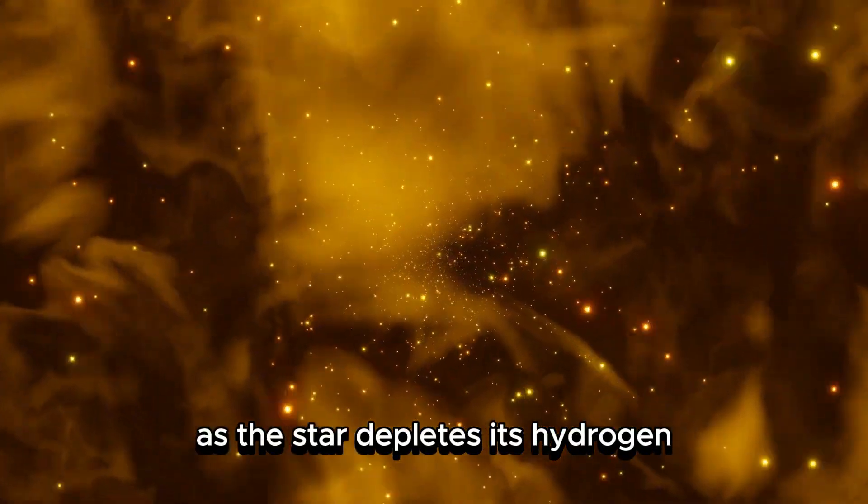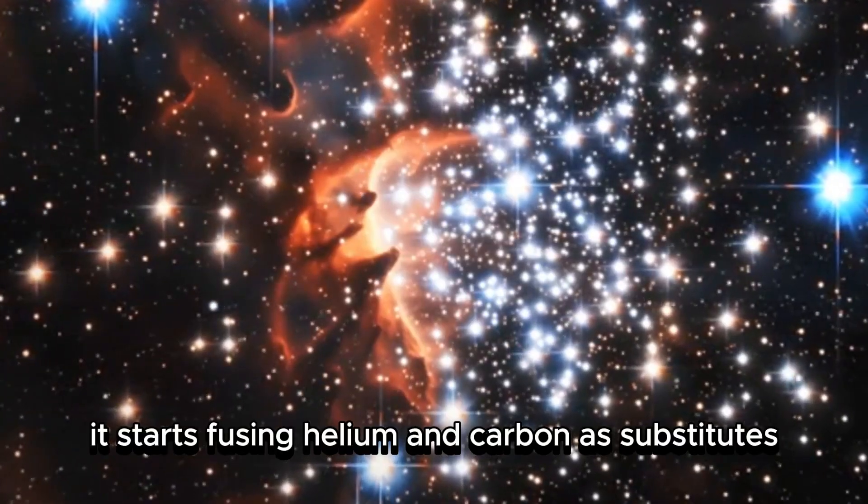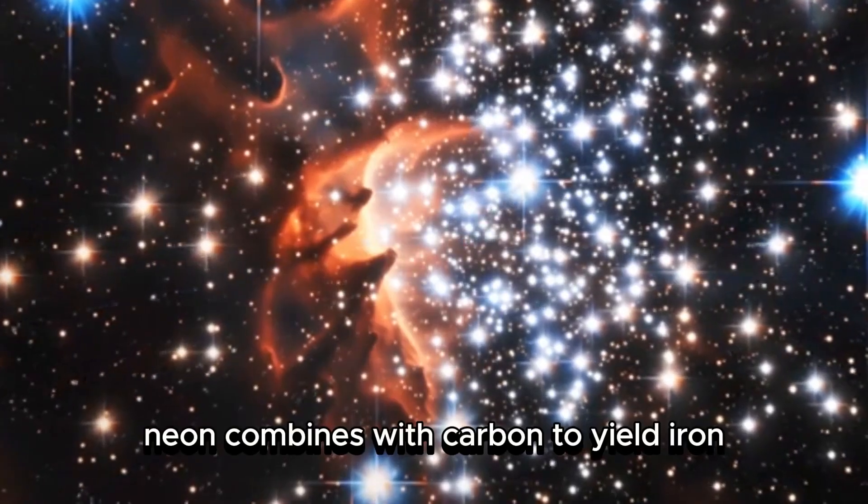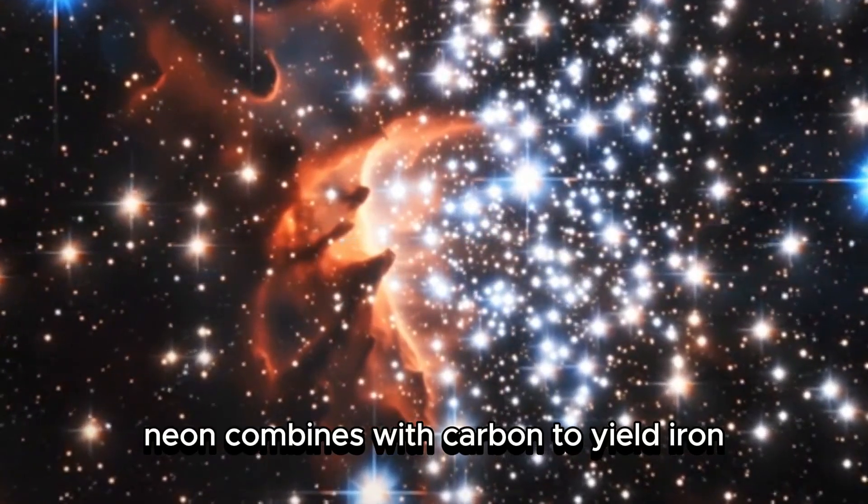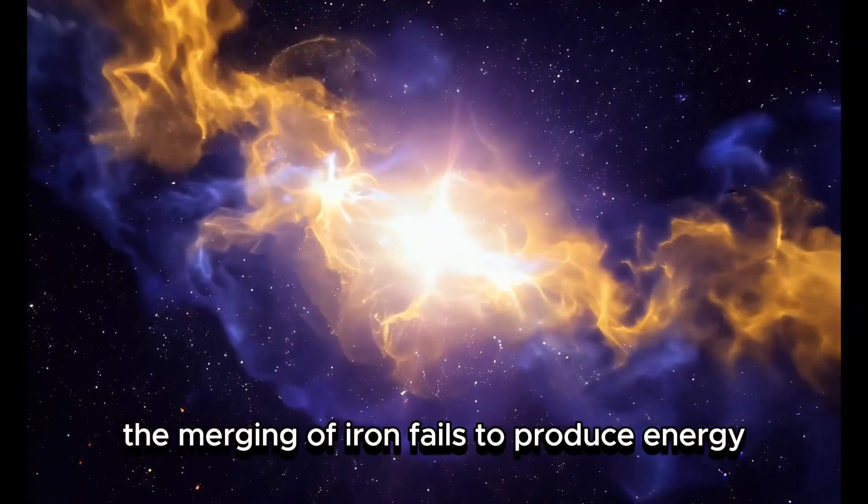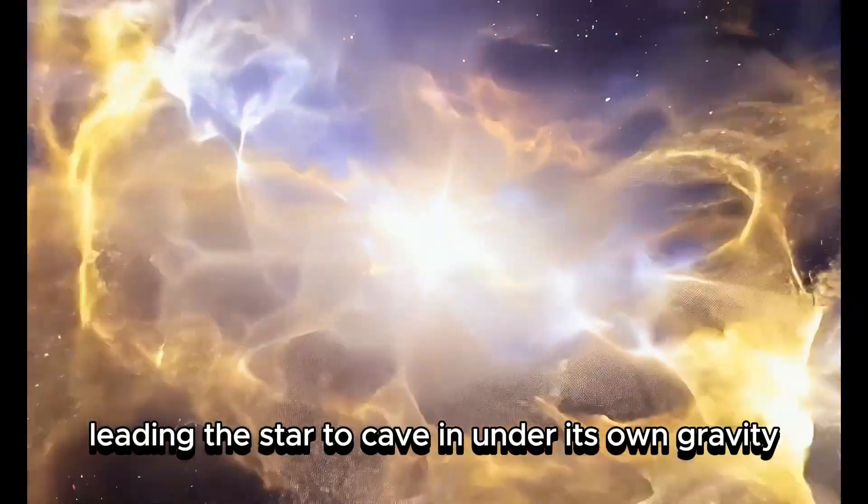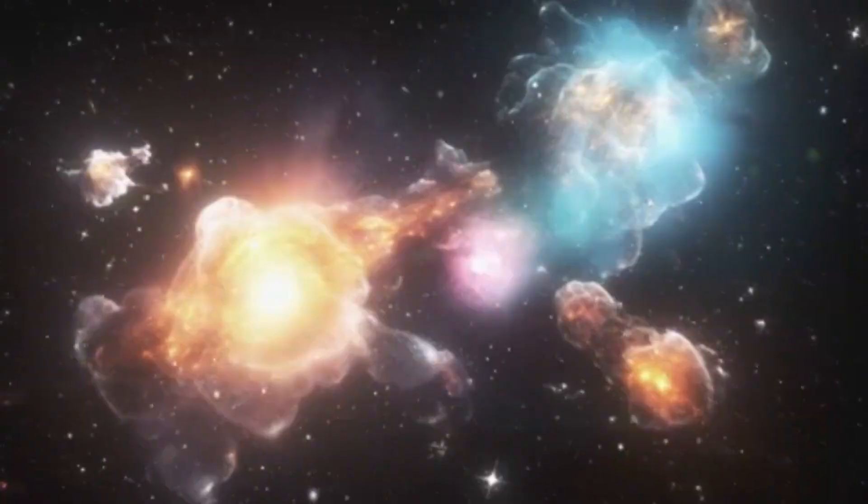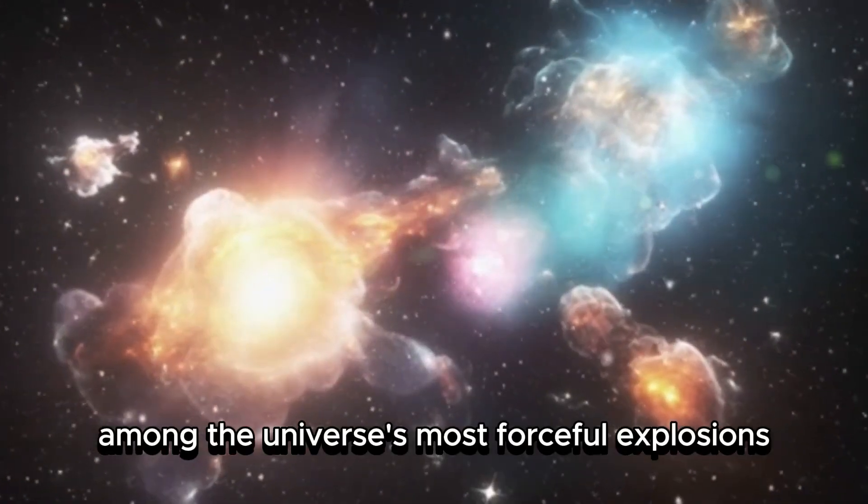As the star depletes its hydrogen, it starts fusing helium and carbon as substitutes. When helium runs out, neon combines with carbon to yield iron. The merging of iron fails to produce energy, leading the star to cave in under its own gravity and ultimately burst into a supernova, among the universe's most forceful explosions.